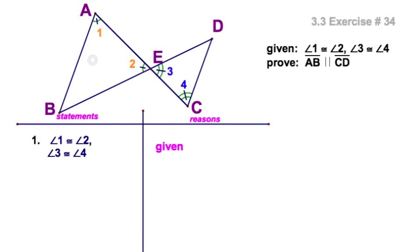In this proof, I know these two orange angles are congruent, the two blue ones are congruent, and I'm going to prove that the lines containing these segments are parallel.